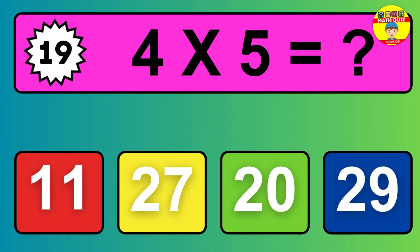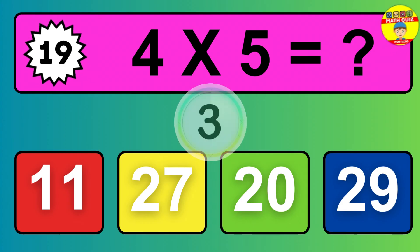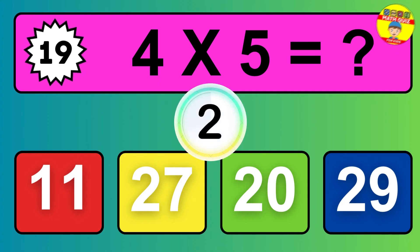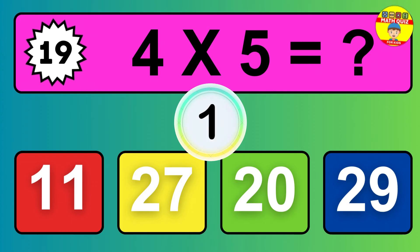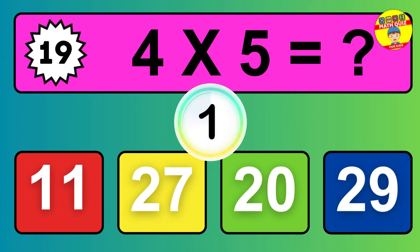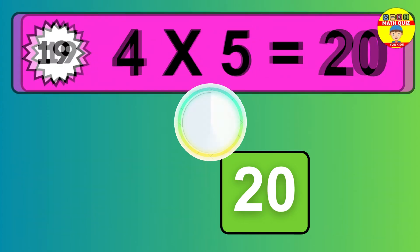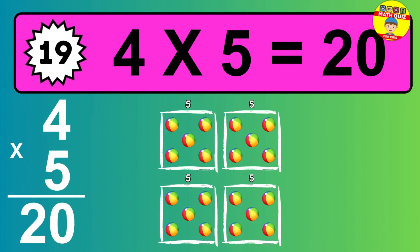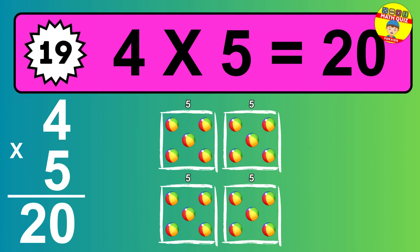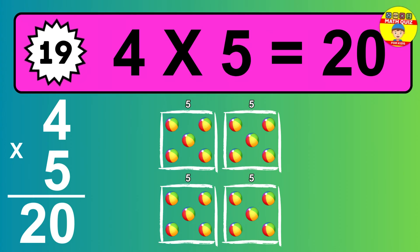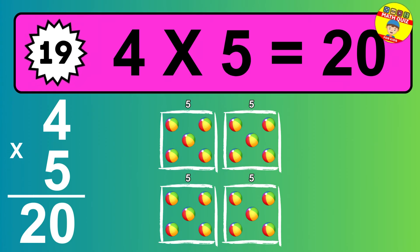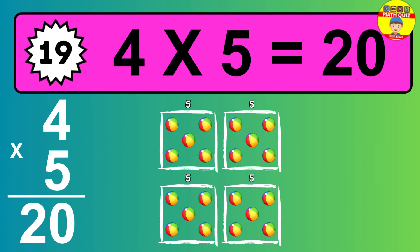Question 19. Four times five equals what? The answer is four times five is twenty. To calculate, we have four groups with five balls each one. So how many balls do we have? Twenty balls.